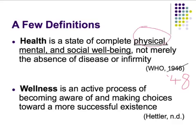Starting with physical: is someone healthy? Do they have low blood pressure, a low resting heart rate? Is their body fat percentage at an acceptable level? Mental: are they happy, not depressed? These are all indicators of mental health. Do they feel a good sense of well-being? And then social: do they interact with others? Do they have strong friendship groups, a sense of community, a sense of family?